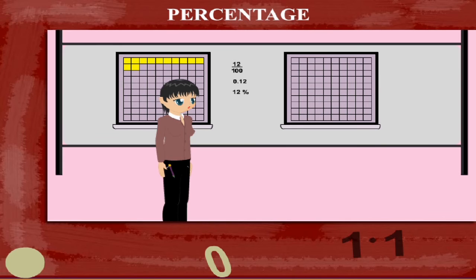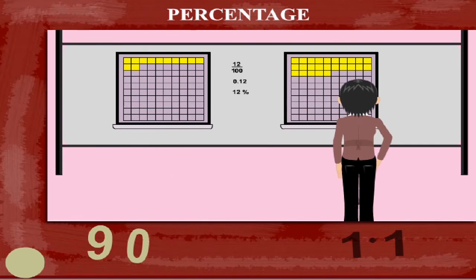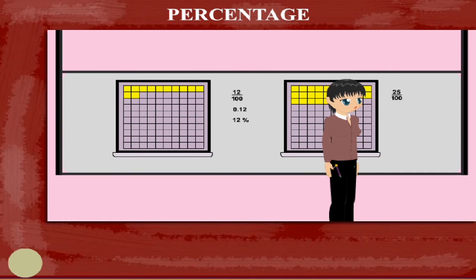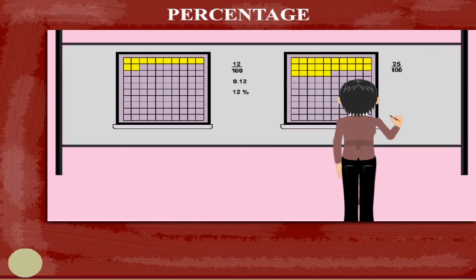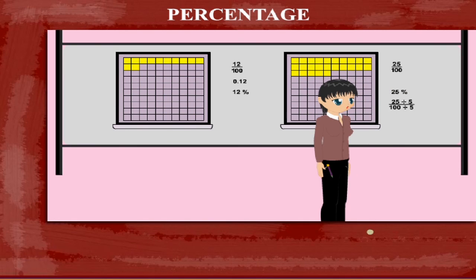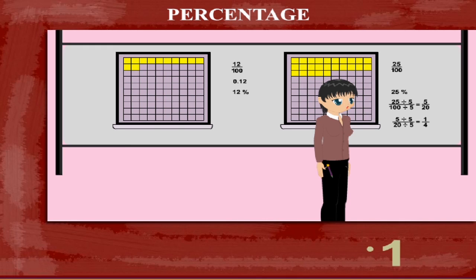Nancy has another check square with 25 colored squares out of 100. This is 25 upon 100, or 25%. The equivalent fraction of 25 upon 100 is 5 upon 20, which is equal to 1 upon 4.